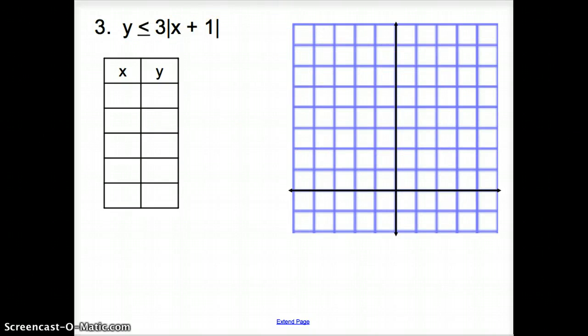Let's try one more. Now, we have y is less than or equal to 3 times the absolute value of x plus 1. Now, please remember that we want to get this x plus 1 to be 0. And, how do we do that? Well,